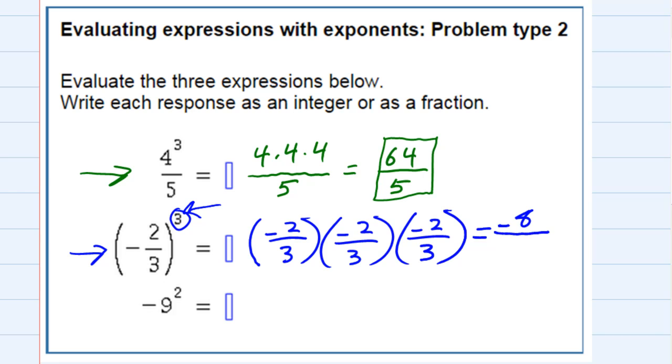And then in the denominator, 3 times 3 times 3, 3 times 3 is 9 times 3 is 27. And since those numbers won't reduce, that will be our answer.